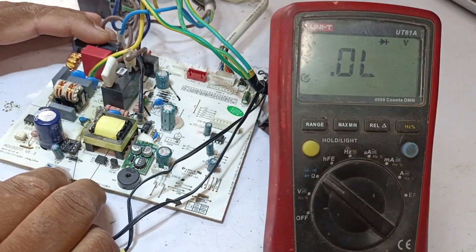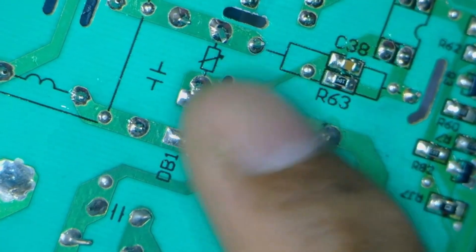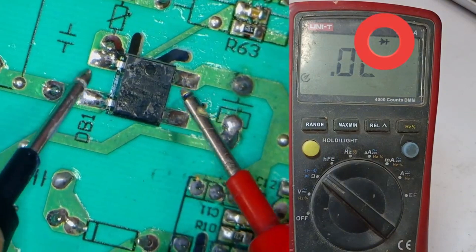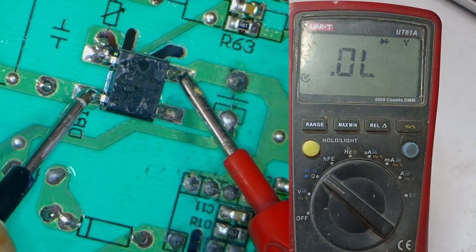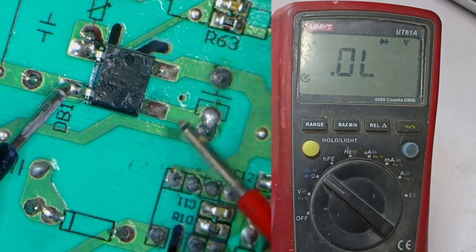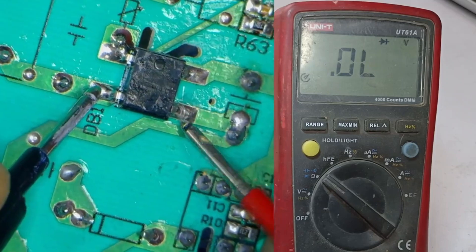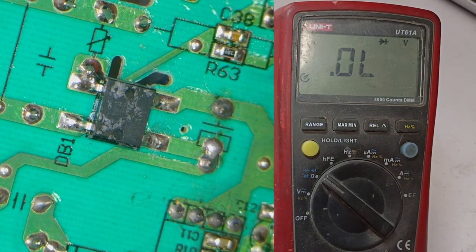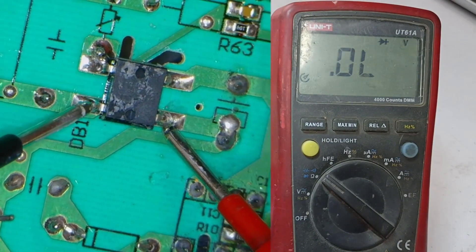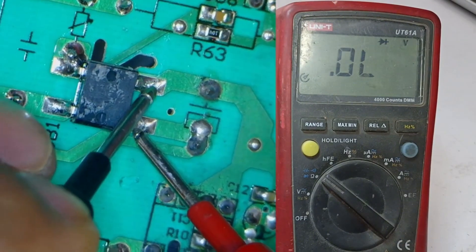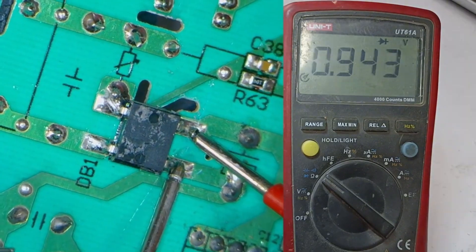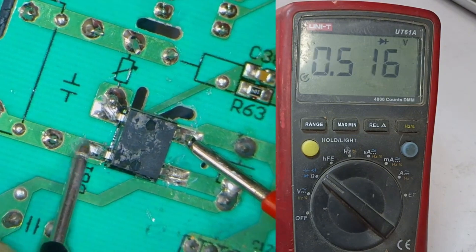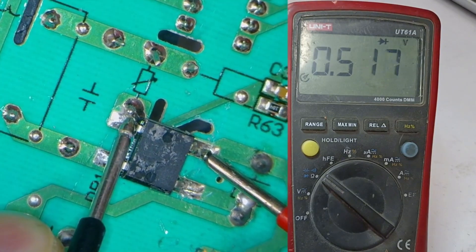The second thing we need to test here is the bridge rectifier. If this bridge rectifier is short-circuited, the problem will reoccur. So we'll test it using the diode mode and check if it's working correctly or faulty. You can place the positive and negative probes anywhere. There should be no reading or zero point displayed here. Now, we'll reverse the polarity. Still, we're not getting any reading. Voltage drop is showing up on this point. This bridge rectifier is showing as completely okay, and no problems are visible here.